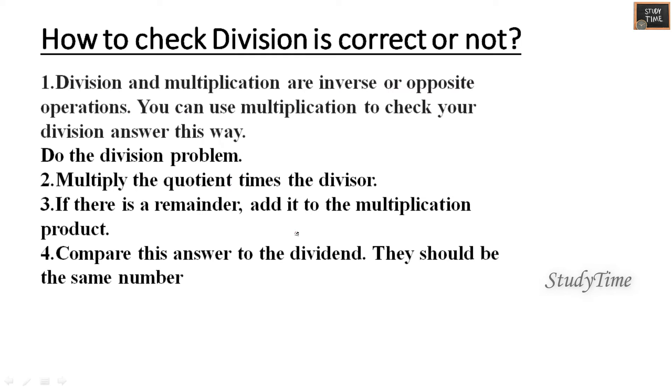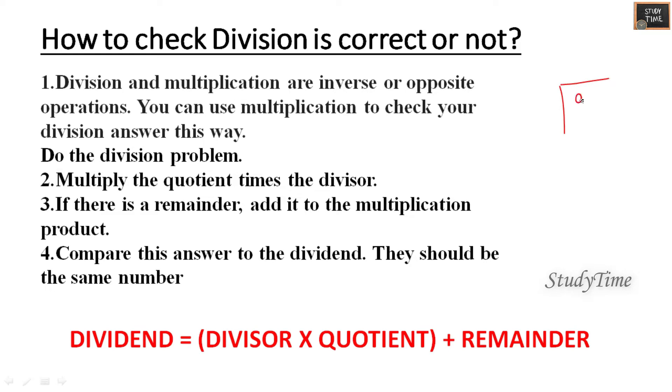How will you check if the division is correct or not? What you have to do is multiply the divisor and quotient and add it with the remainder. For example, 9 divided by 2: 2 fours are 8 and the remainder is 1. So how will you check whether this is correct? You have to multiply divisor and quotient and add it with the remainder: 2 into 4 plus 1. So this is the way to check if you have done the division correct or not.